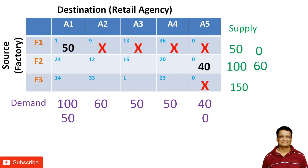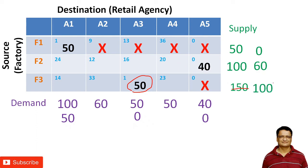Out of the remaining matrix, the minimum cost is again 1. I can allocate 50 here because the demand is 50 and available supply is 150. Allocating 50 here completely fulfills this column's demand, and the 150 reduces to 100. This column is exhausted so I mark a cross.